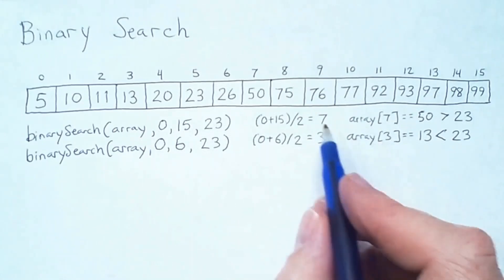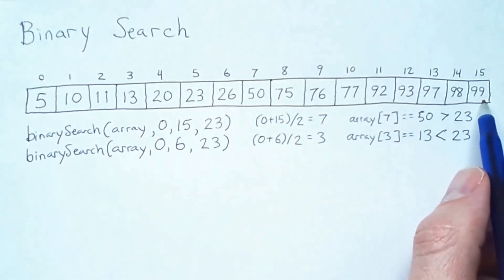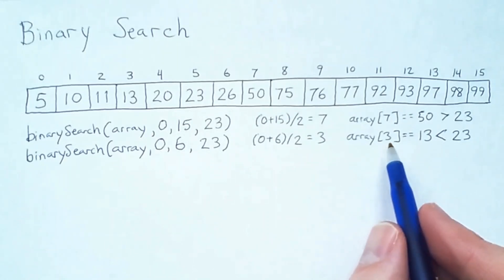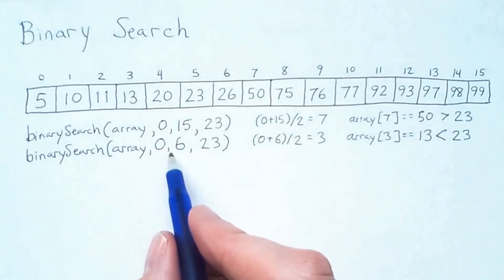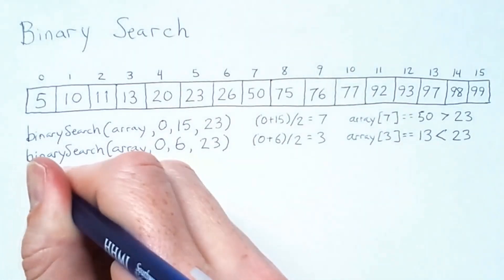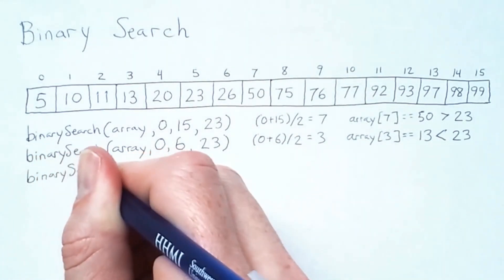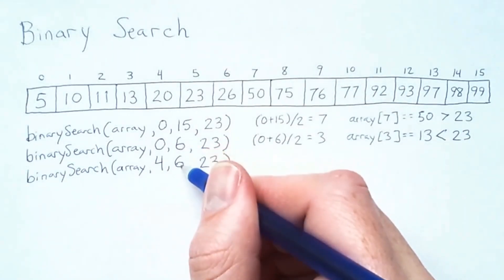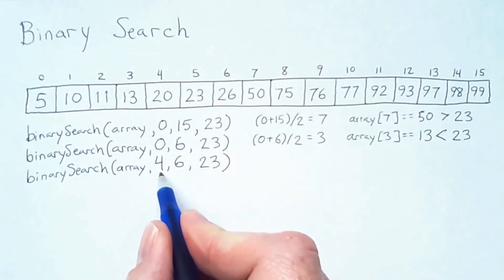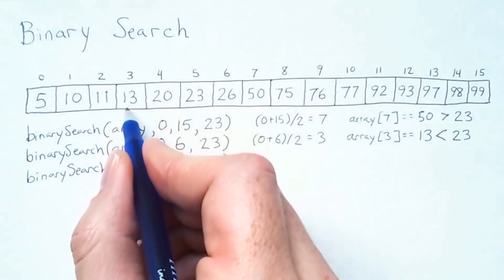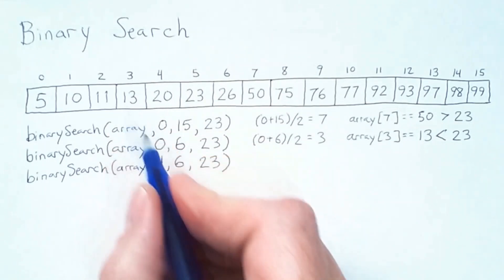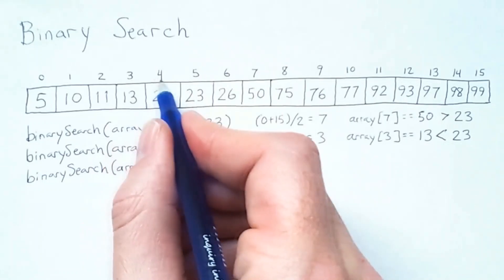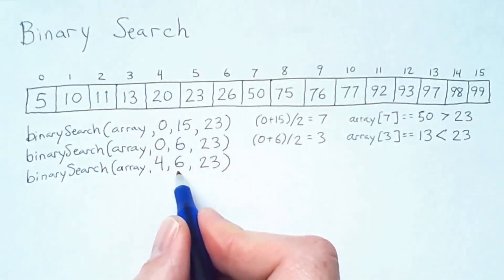Now we want to search to the right of index 3, where the 13 was. However, we've already excluded all the values greater than 50. So we're only searching to the right of index 3 within the sub-range from 0 to 6. This time, the upper bound of the sub-range remained the same at 6. The lower bound increased because we just checked index 3, found 13, and we know that our search key of 23 is greater than 13. So we move that up by 1. Our lower bound is 4. Our upper bound remains 6.